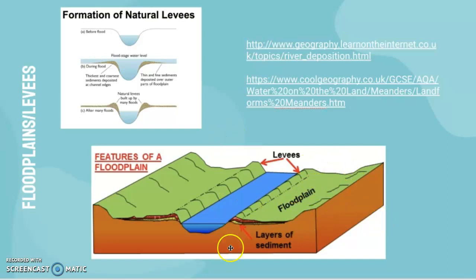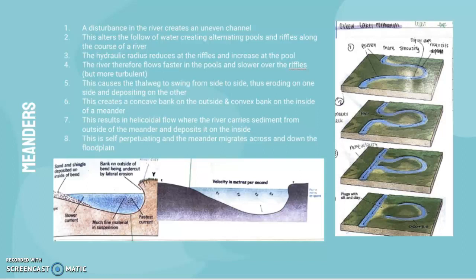Now we'll look at meanders. I'll go step by step again. This is from my notes. Let's just imagine that this step one river is just a river. Basically, in that river, a disturbance creates an uneven channel.